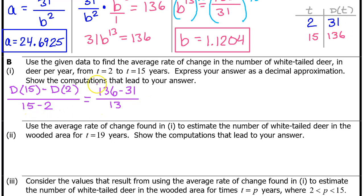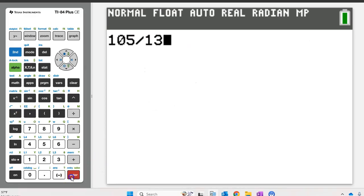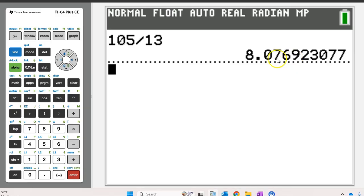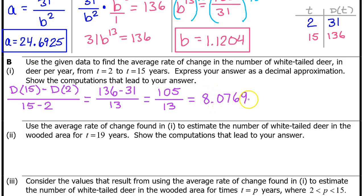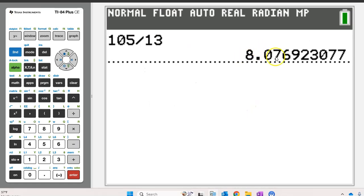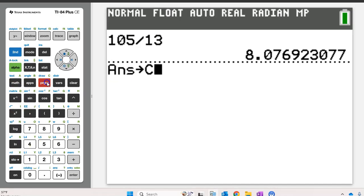In the setup we were told that d at 15 is 136 and d at 2 is 31. Obviously 15 minus 2 is 13. So we have 136 minus 31 over 13, which is 105 over 13. They asked us to express the answer as a decimal approximation: 8.0769. Let's define this as the letter c, and store this value into letter c on the calculator by hitting store and then alpha c enter.